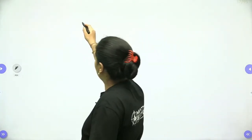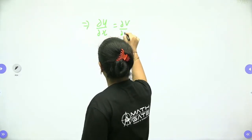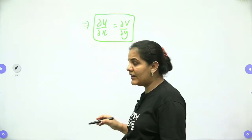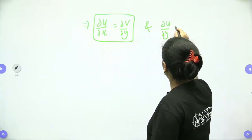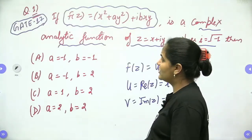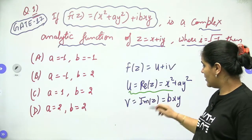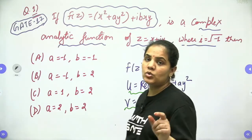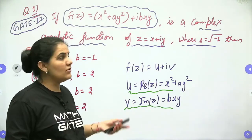The function will be analytic if ∂u/∂x equals ∂v/∂y, and ∂u/∂y equals minus ∂v/∂x. We have to satisfy these two conditions. We have the real part u and the imaginary part v. Let's find u_x, u_y, v_x, and v_y, and then put the values into the Cauchy-Riemann equation.